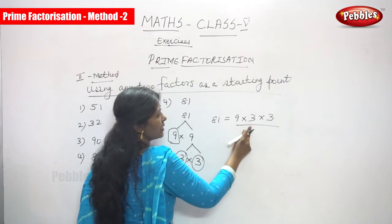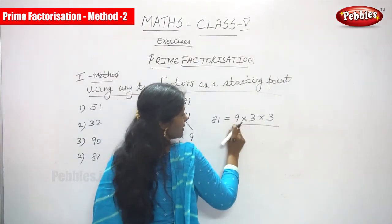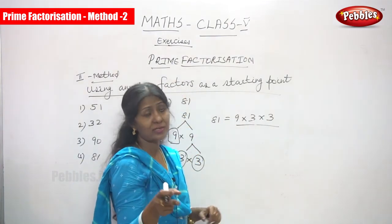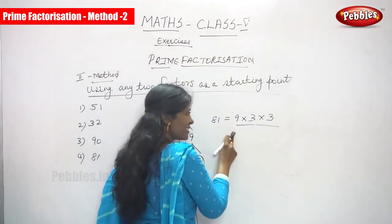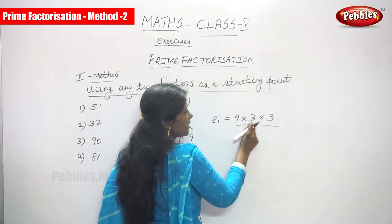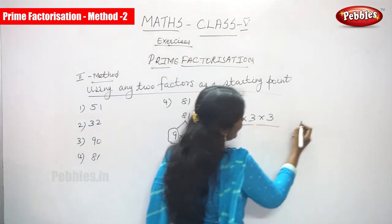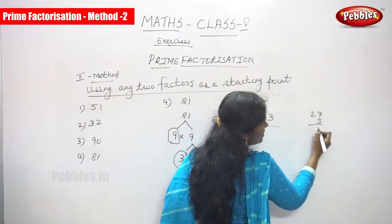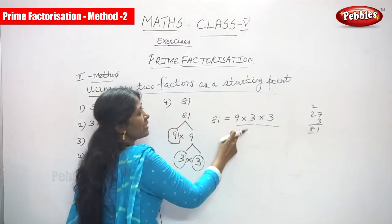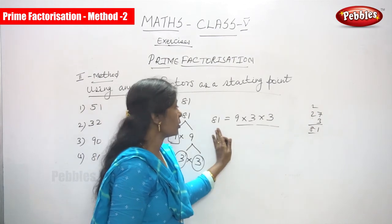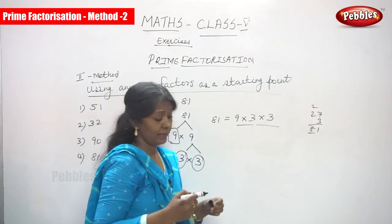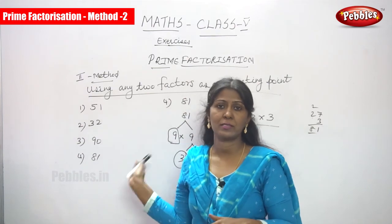So the factors of 81 are 9 into 3 into 3. Here 9 is a composite number and 3 is a prime number. Since the question says any two factors, we include composite numbers as well as prime numbers. So 81 is equal to 9 into 3 into 3, and that is the factorization of 81.